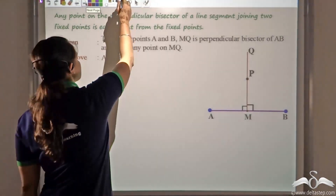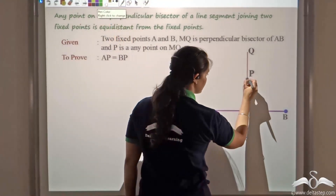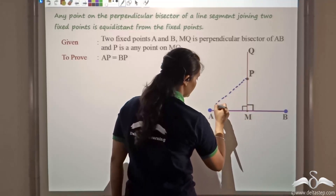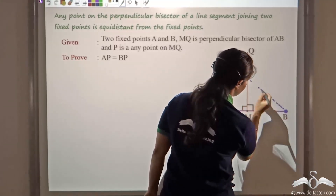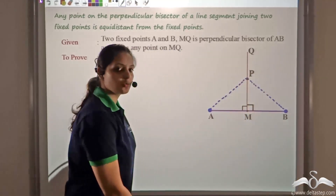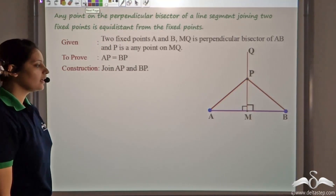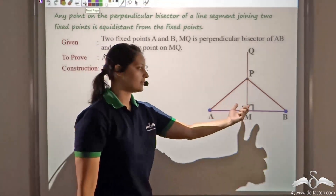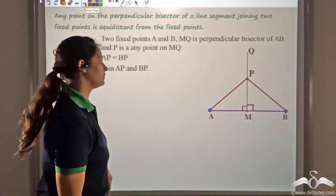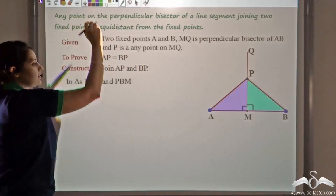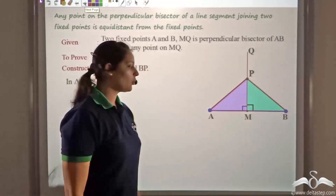For that, what I will do is I will join the lines AP and BP. Now, let's look at these two triangles: triangle PAM and triangle PBM. Let's colour these two triangles and look at them.